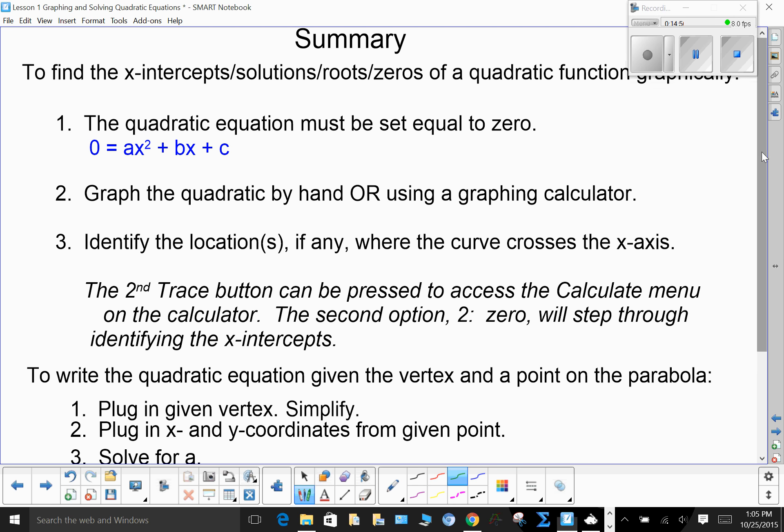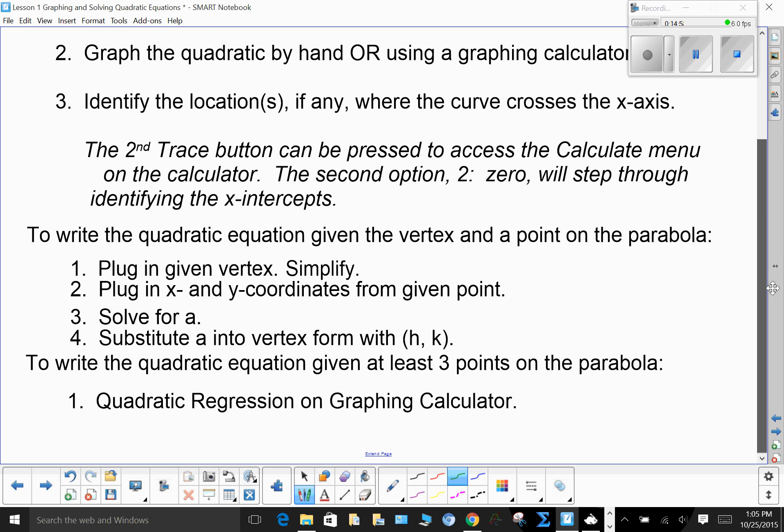To write the quadratic equation, given the vertex and a point on the parabola, plug in the given vertex into the template, simplify, plug in the x and the y coordinates from the second point, and solve for a, then substitute back in a, h, and k. You've got the vertex form. Now, to get it into standard form, you'll need to square the binomial, the x minus h, distribute the a, and then combine your like terms.